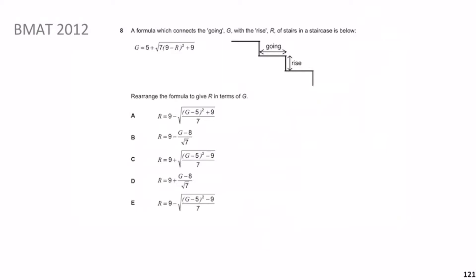So what we need to do is rearrange the formula to give R in terms of G — we need to bring R on its own. The first thing I'm going to do is shift the 5 to the other side, so G minus 5 equals the square root of 79 minus R squared plus 9.